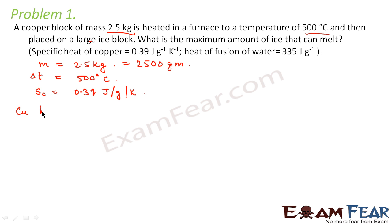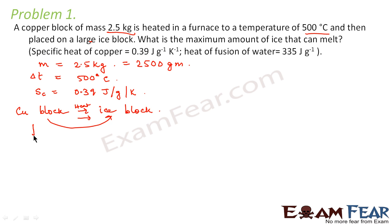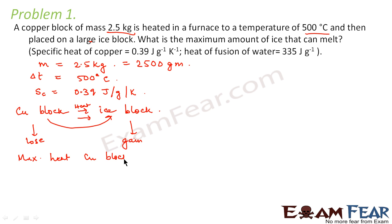What is the maximum amount of heat that the copper block can lose? When the copper block is placed over the ice block, heat transfer will take place from the copper block to the ice block. The copper block will lose heat and the ice block will gain heat. But how much heat can the copper block lose? The maximum heat which the copper block can lose will be equal to m into sc into delta t.